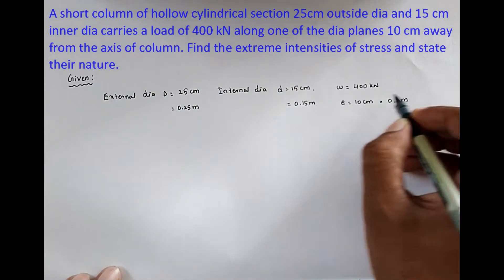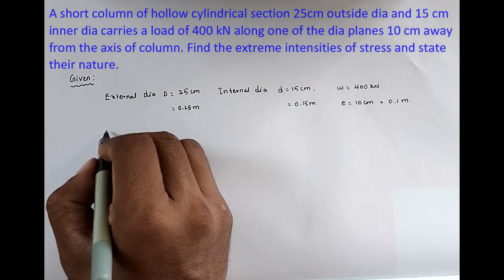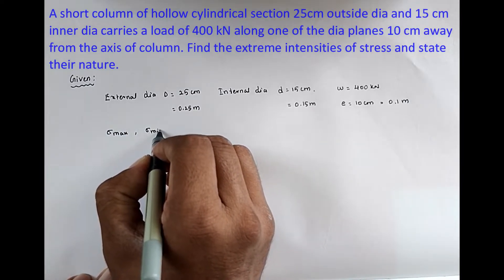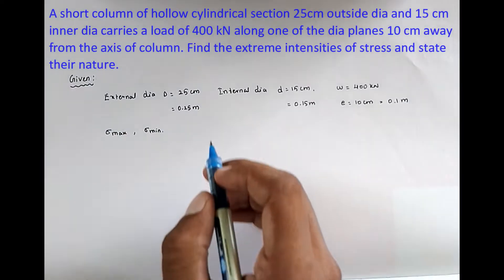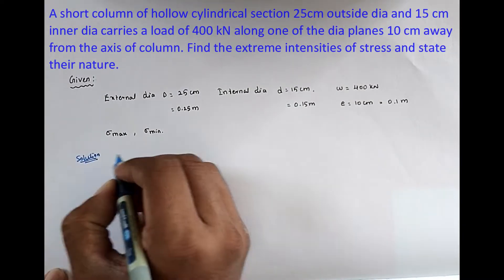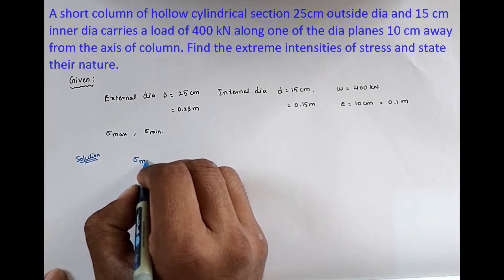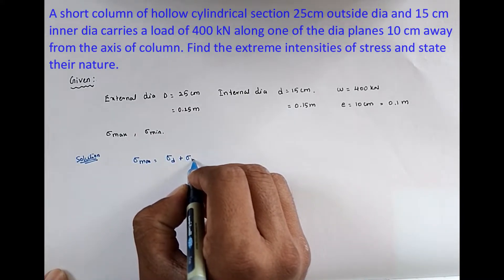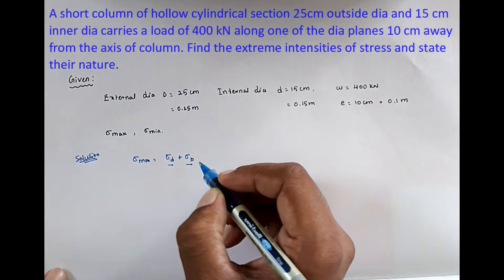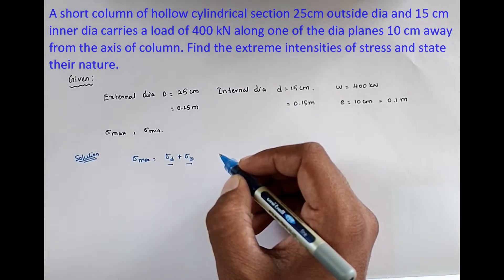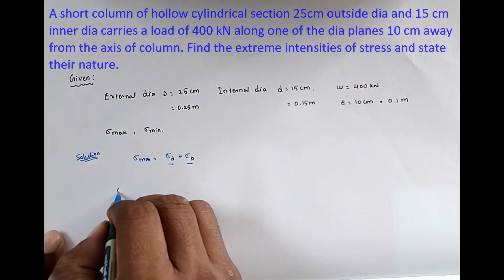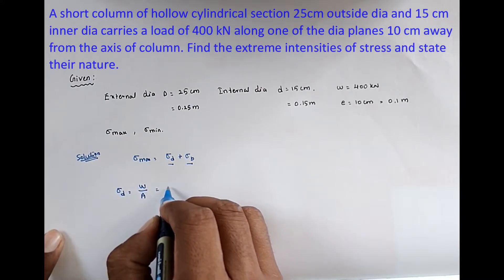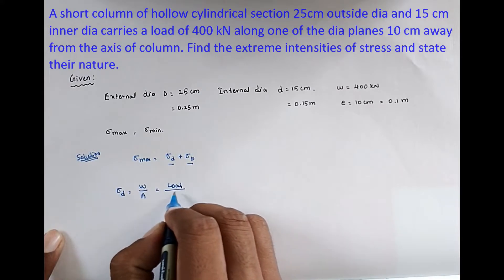We have to find the intensities of stresses, that is sigma maximum and sigma minimum. The formula for sigma max is sigma_D plus sigma_B — that is direct stress plus bending stress.